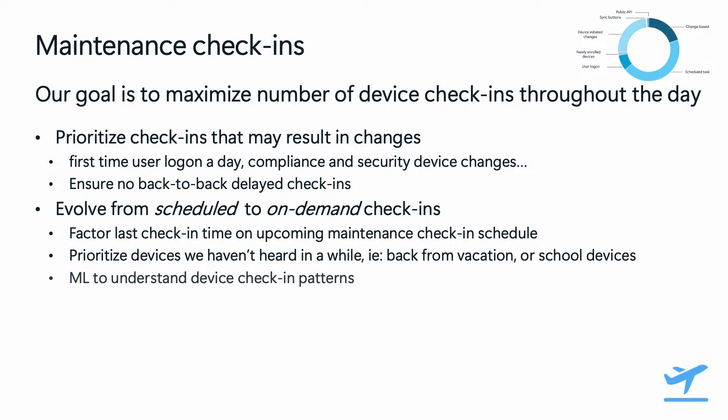What that means practically: imagine a device that just recently checked in and applied changes — it would not be very useful to have a maintenance check-in back to back just because it happened to be scheduled. It might make more sense to push that scheduled check-in a little further in time. Similarly, we want to avoid back-to-back delayed check-ins, and we want to take into account devices with particular online/offline patterns — like school devices, manufacturing floor devices, or devices for flight attendants — so Intune understands those usage patterns and triggers maintenance check-ins at the right time.